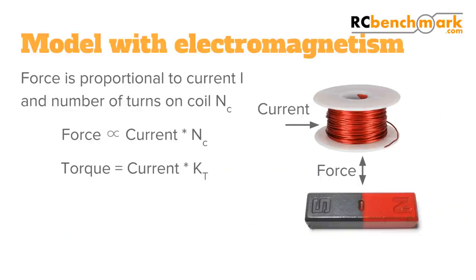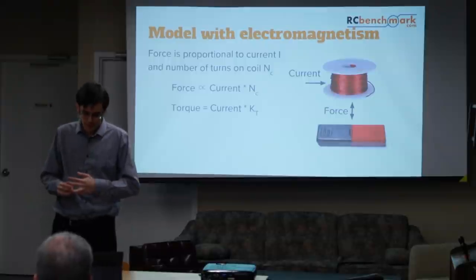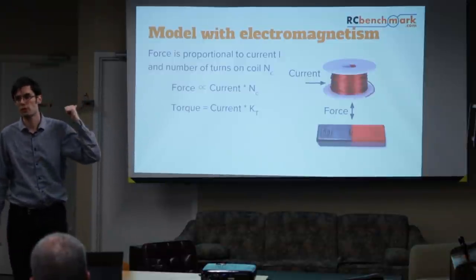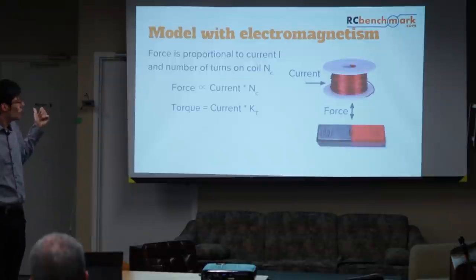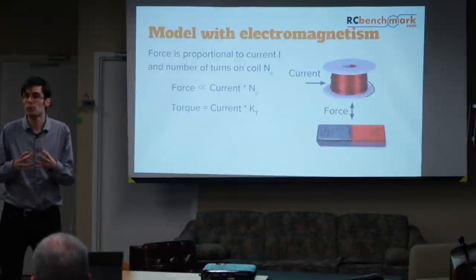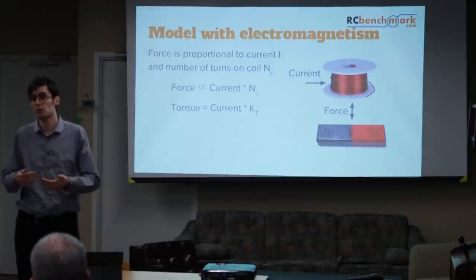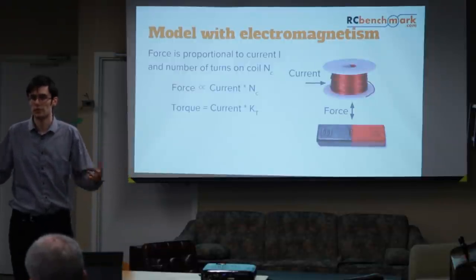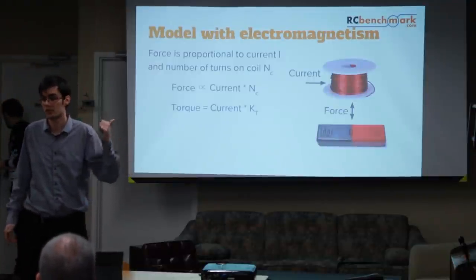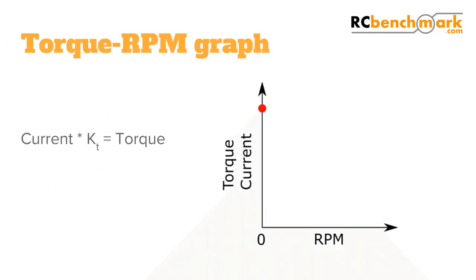Now let's add electromagnetism. If we have a magnet and a coil, when current goes through the coil it generates a force — or torque in a motor. The torque is proportional to the current and to the number of coils. You might think: if I want more torque, I could add more turns. But then your wire is longer and there's more resistance. You could increase current, but losses are proportional to current squared, so it doesn't help.